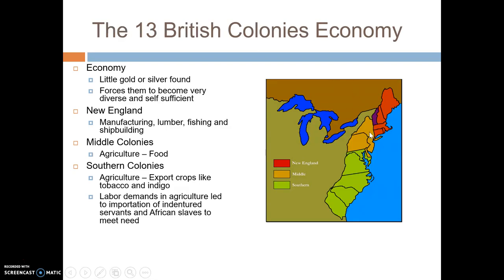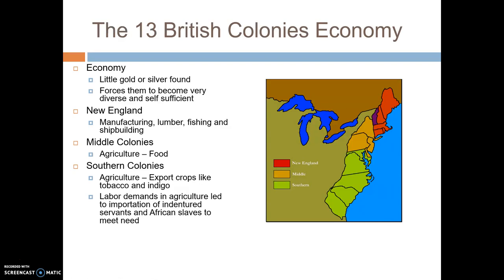The middle colonies — New York, Pennsylvania, New Jersey, and Delaware — while sharing some characteristics with New England, really focused on agricultural production, specifically food. Then the southern colonies, which had the best climate, also focused on agriculture — specifically cash crops. Plantations rose up in Maryland, Virginia, the Carolinas, and Georgia, growing crops like tobacco, indigo, and rice. Because of this large-scale agriculture, the southern colonies relied on slave labor since there weren't enough settlers to do all the work.